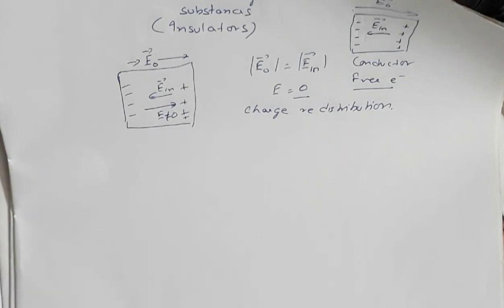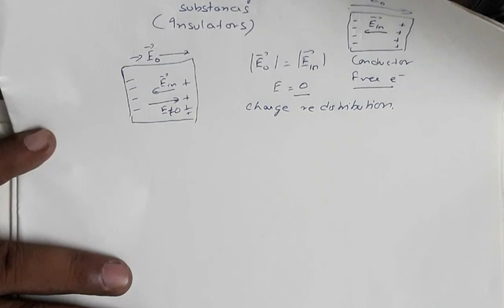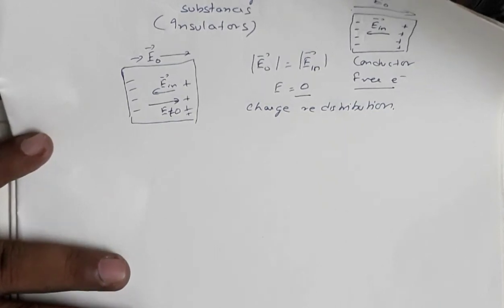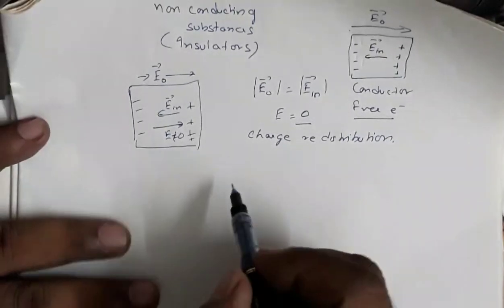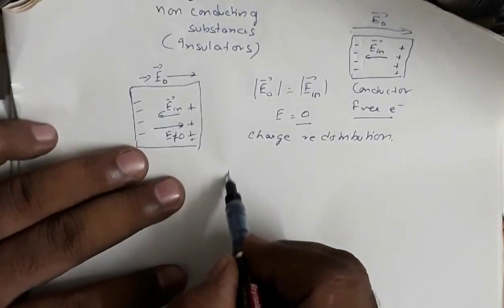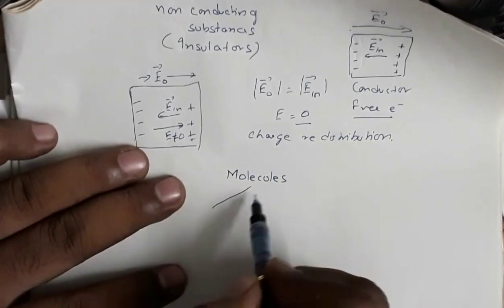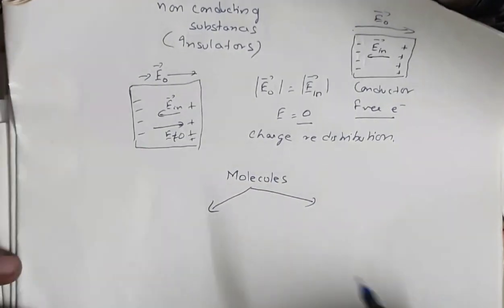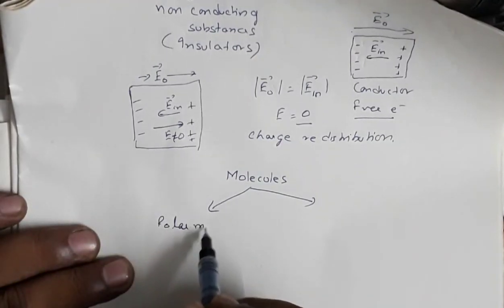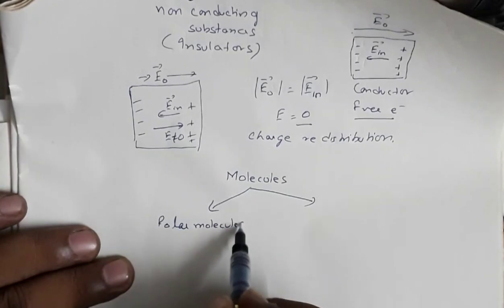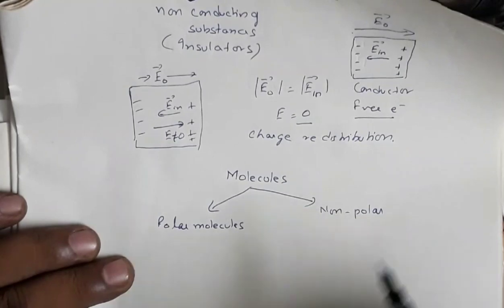To understand the behavior of a dielectric material in an external electric field, we need to study them at the molecular level. Dielectric molecules are of two types: polar molecules and non-polar molecules.